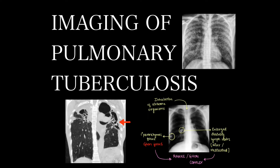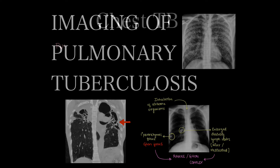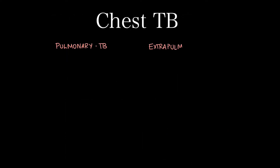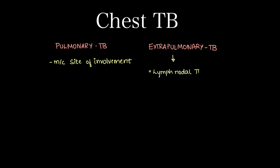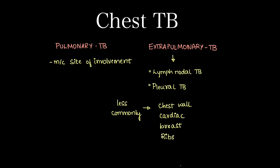Let's learn imaging of pulmonary tuberculosis. Chest tuberculosis can be divided into pulmonary TB and extra pulmonary TB. Lungs are the most common site of involvement. Extra pulmonary TB involves lymph nodal tuberculosis, pleural tuberculosis, and less commonly chest wall tuberculosis, cardiac tuberculosis, breast and rib tuberculosis.